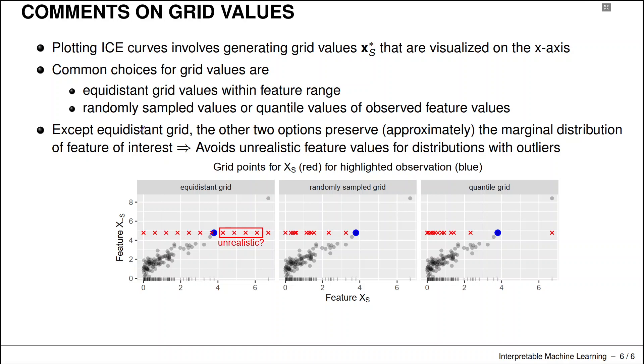We can randomly sample values, or—and this might be the most reasonable choice—we use quantile values for the observed feature values.